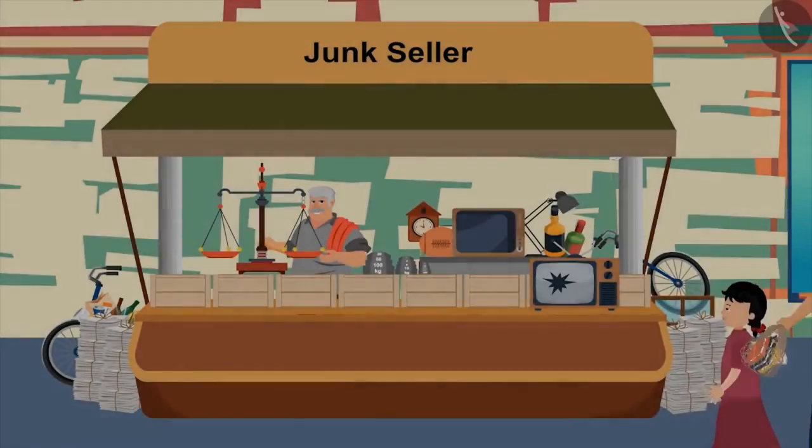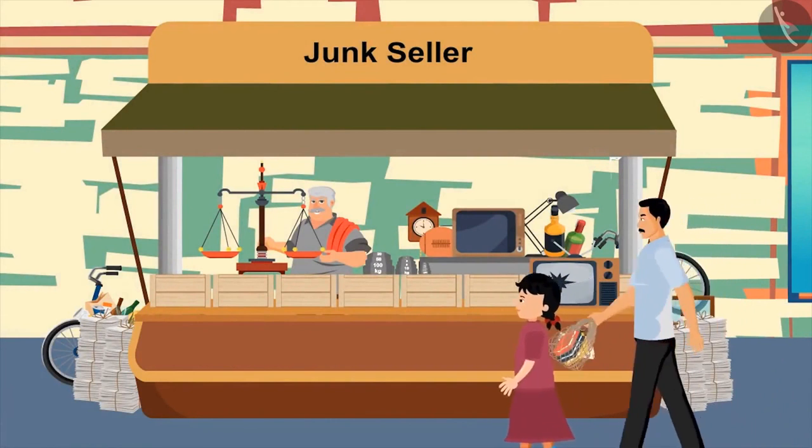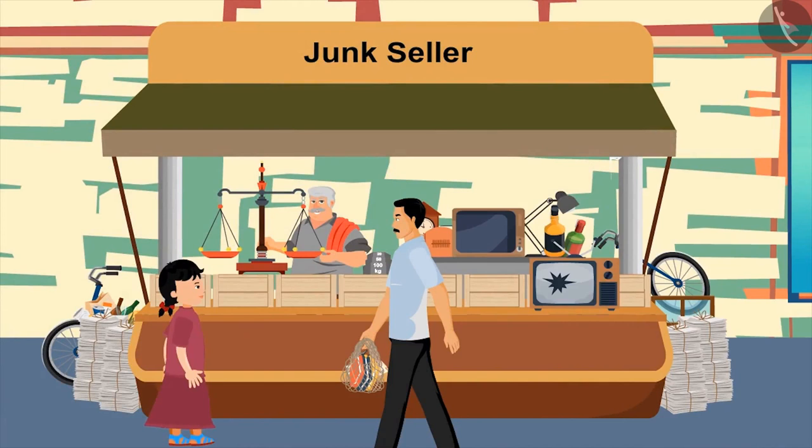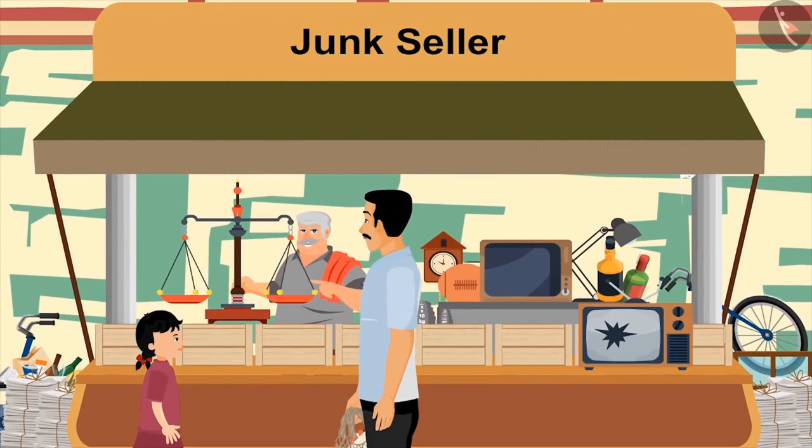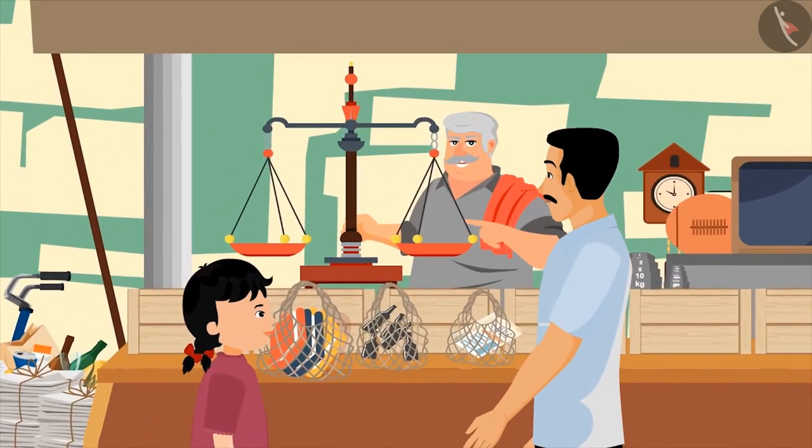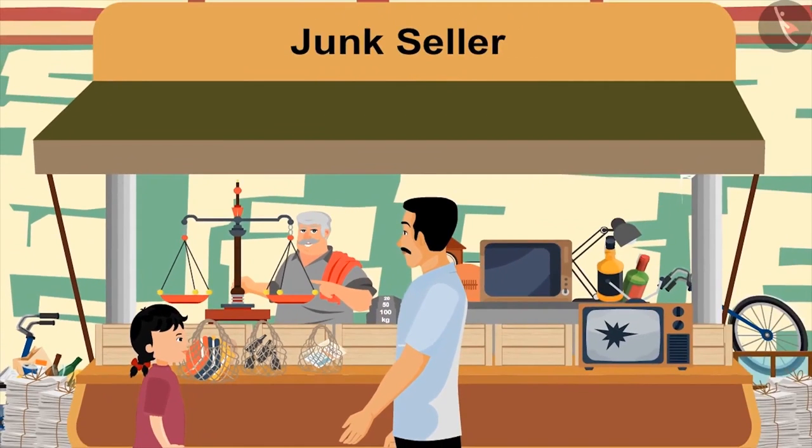Today, Gopal and his daughter Neetu are going to sell junk at Birju uncle's shop. On seeing Gopal and Neetu, Birju uncle gets happy. Oh, nice. Gopal, today you have brought your daughter with you. Yes, uncle. Nowadays, she is helping me a lot with my work. Wow, this is a good thing. Well, say, what have you brought today? Uncle, here is some newspapers, some old books and some cans of bottles.